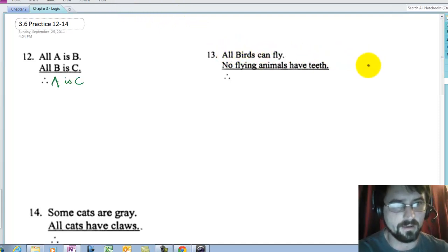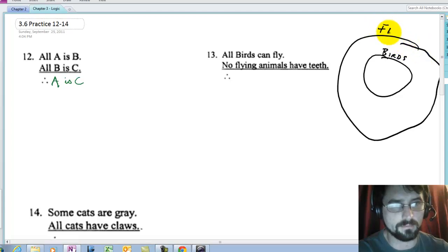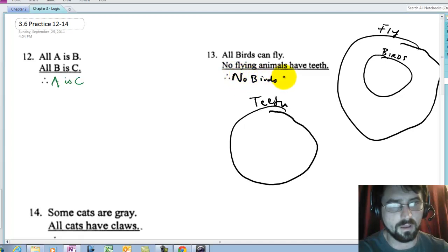All birds can fly. So birds are in things that can fly. No flying animals have teeth. So things with teeth are separate. So we can also conclude that no birds have teeth.